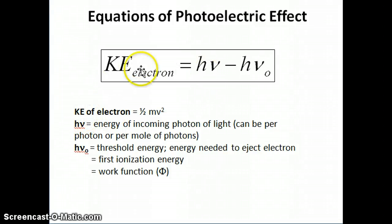Now, here's a description of each of these terms. Kinetic energy of the electron, of course, is ½mv². Mass, in this case, mass of electron. V is velocity of electron. hν, this term here, is the energy of the incoming photon of light. Now, you can express this, you'll see this in an example that we're going to do in a second. You can express this per photon, energy per photon, or energy per mole of photons. So if you express it per photon, then it's very small. Express it per mole of photon, then it's a bigger and more measurable number.